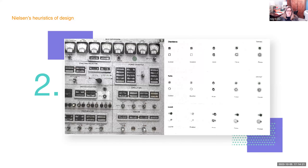Number two: match between system and the real world. The UI design should use a language that users already know, using references to the real world. That's why toggle switches look like real physical switches, and buttons look like real buttons you could press.